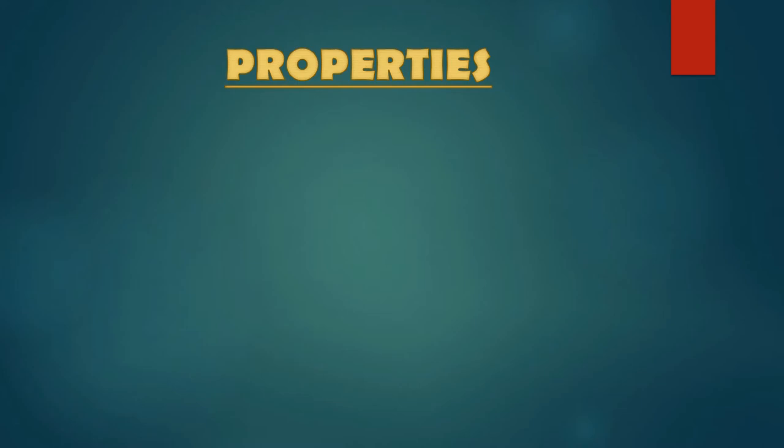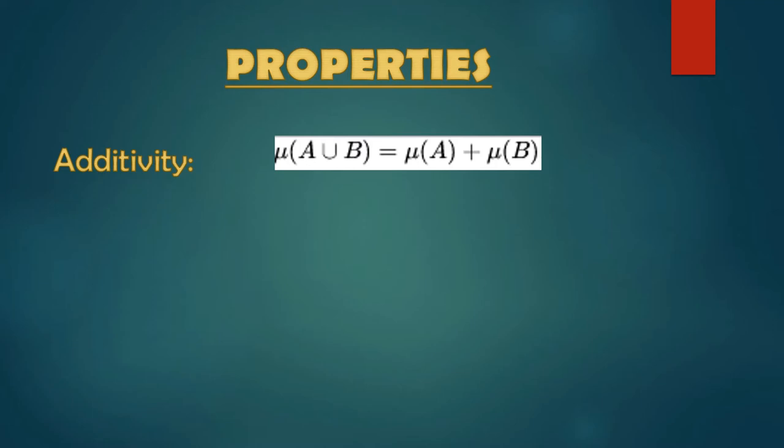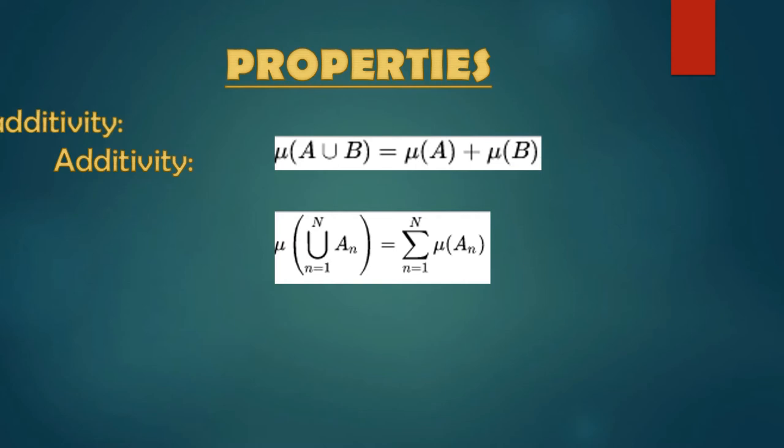To continue with our proof, we would like to make sure that these properties are clear. In set theory, when we speak about additivity, we say that we sum two or more segments that don't have any points in common. It means they are disjoint. We formally write it as follows: If we have a union of countably many disjoint events, their sizes add themselves. It is known as sigma additivity.